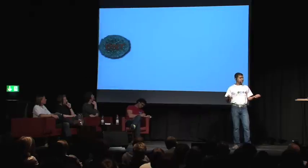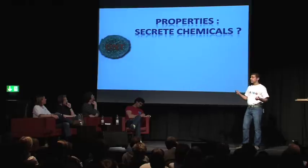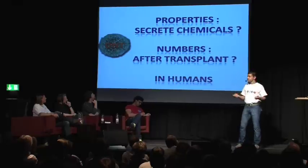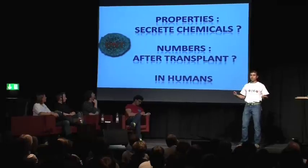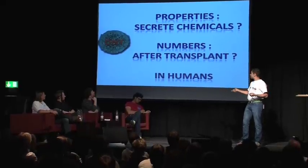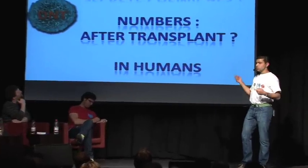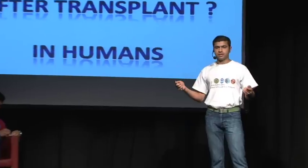My PhD basically deals with trying to study the properties of these double negative cells. For instance, what chemicals they secrete in the body. For instance, what are the numbers in the human body after transplantation. And all this in humans, because we don't know much about these cells in humans. We just know some basic details about them from mouse models, as I said.